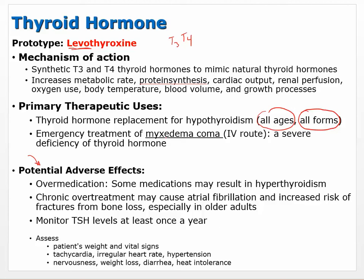Levothyroxine is also used for emergency treatment of myxedema coma via IV route — normally it's taken orally. Myxedema coma is a severe deficiency of thyroid hormone requiring rapid elevation. Adverse effects of over-medication may result in hyperthyroidism. Chronic overtreatment may cause atrial fibrillation and increased risk of fractures from bone loss, especially in older adults. TSH levels should be monitored at least once a year to prevent over-medication.